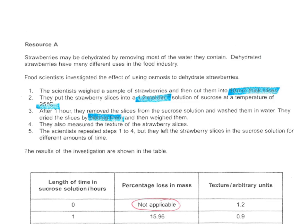In an osmosis investigation, if your independent variable is length of time, there are also lots of things that you need to keep constant, so lots of control variables, and these are highlighted in blue. Each slice needs to be 10mm thick. This allows comparison because the thickness of the slice would affect the distance that the water has to travel by osmosis, so it would affect how quickly it loses water.